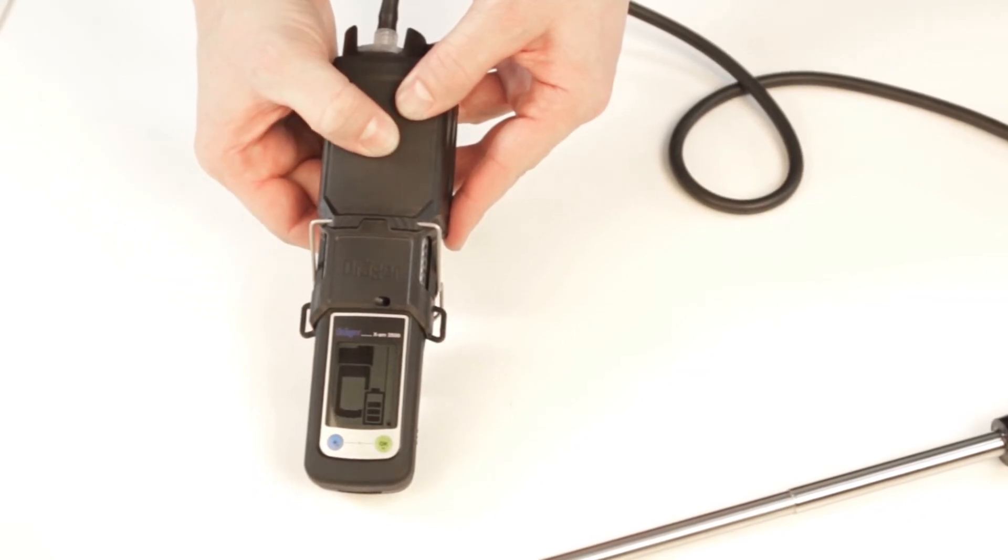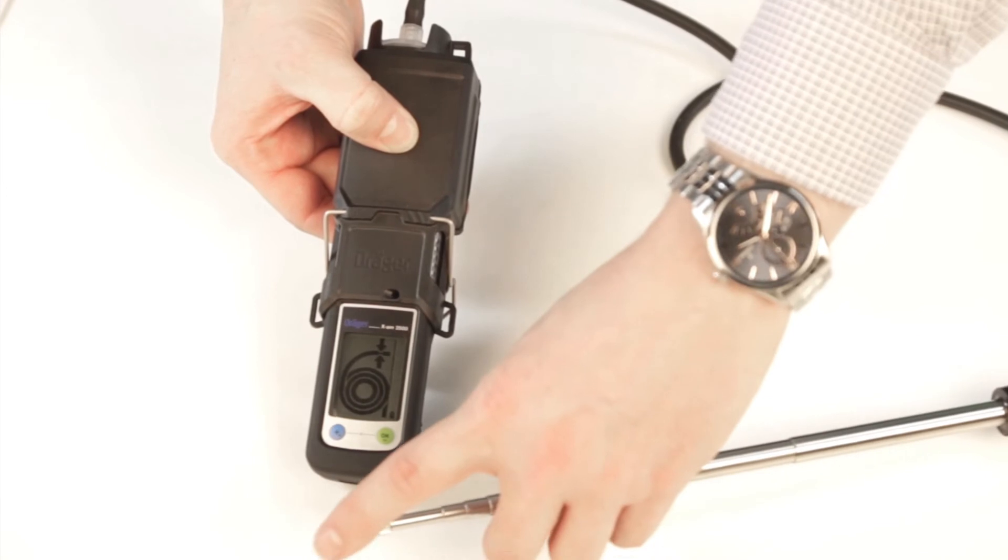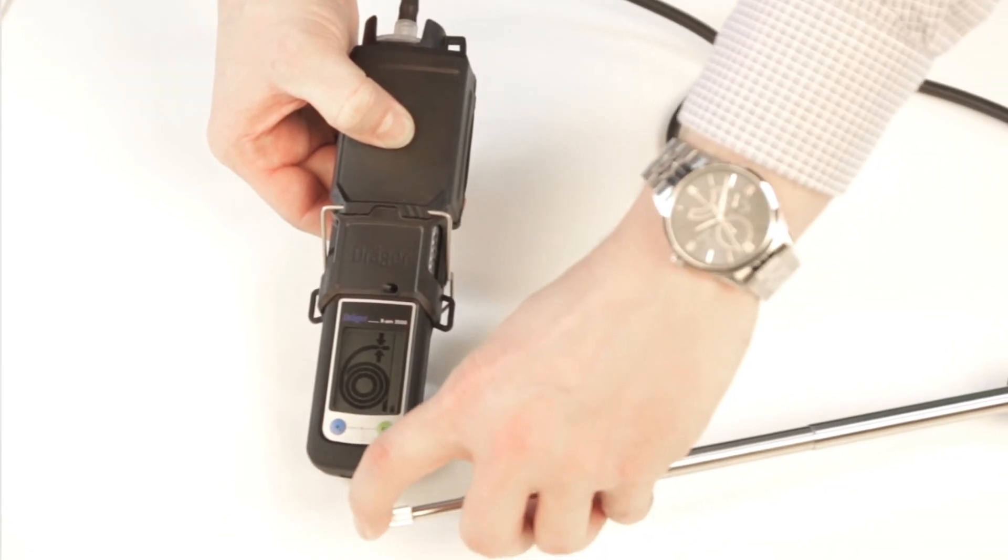To check the flow of the pump, block the end of the hose or probe with your finger. When the system is tight, the pump stops.